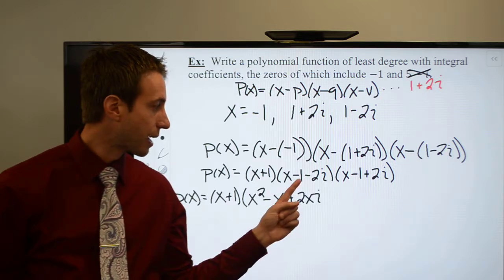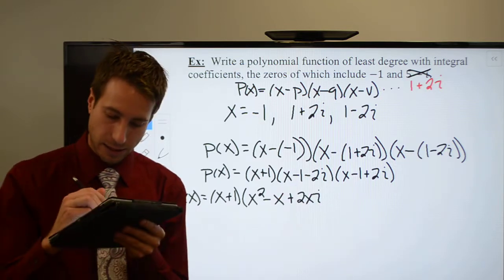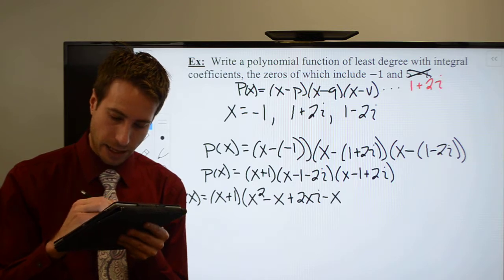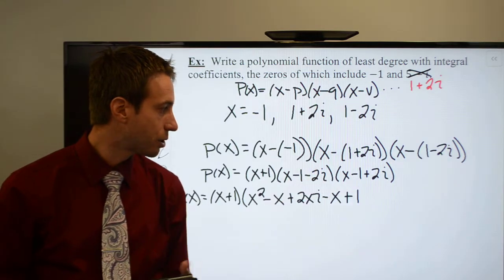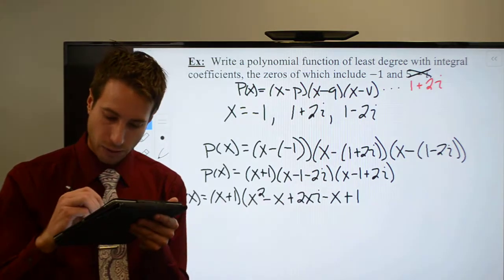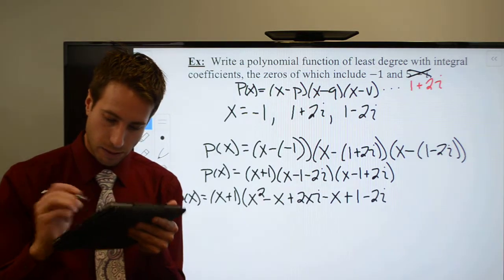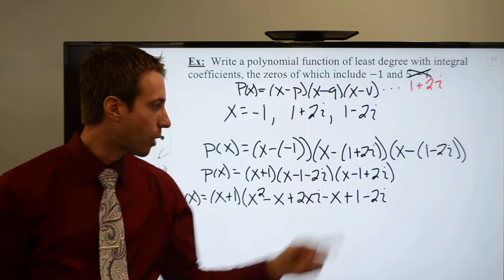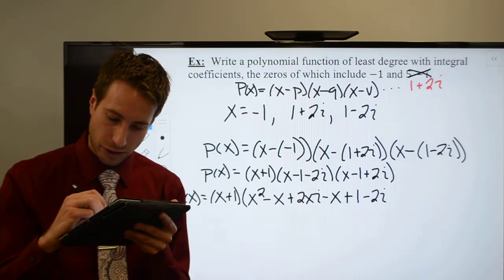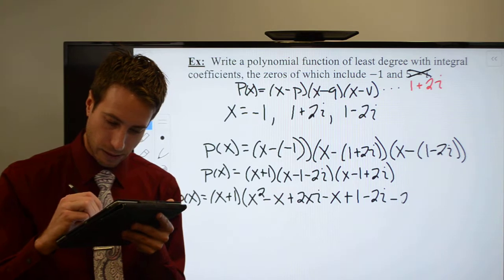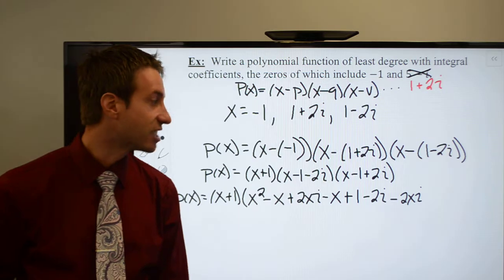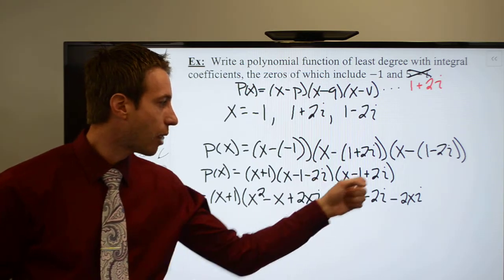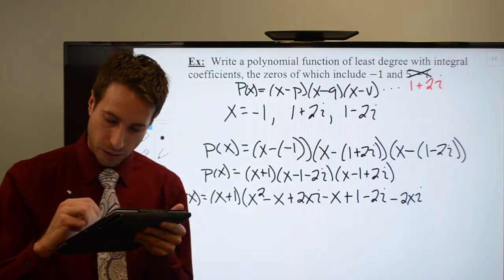All right, now negative 1. Negative 1 times x is going to be minus x. Negative 1 times negative 1 will be plus 1, and negative 1 times 2i is going to be negative 2i. Last one. Negative 2i times x is going to be minus 2xi. Multiplication is commutative. Negative 2i times negative 1 would be plus 2i.